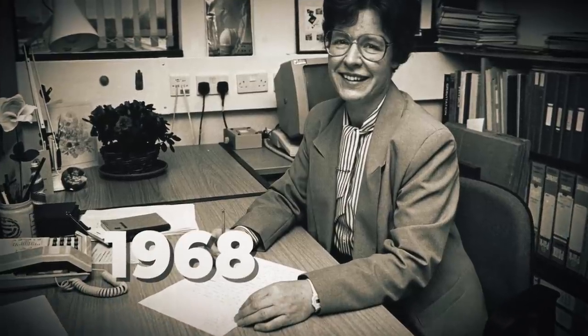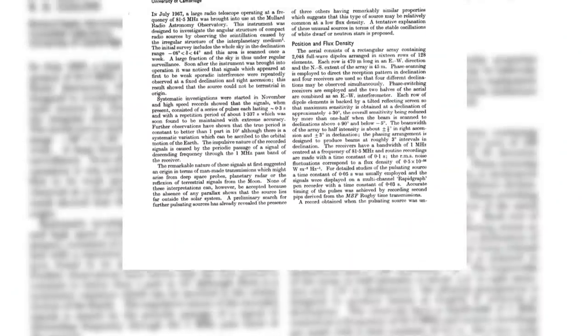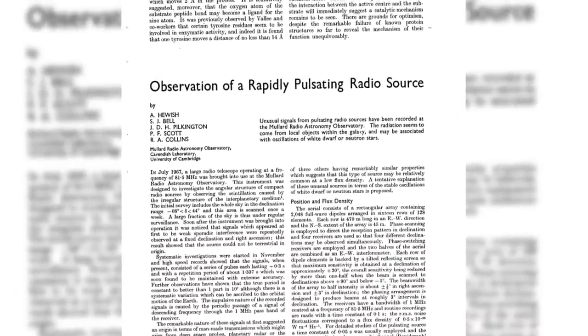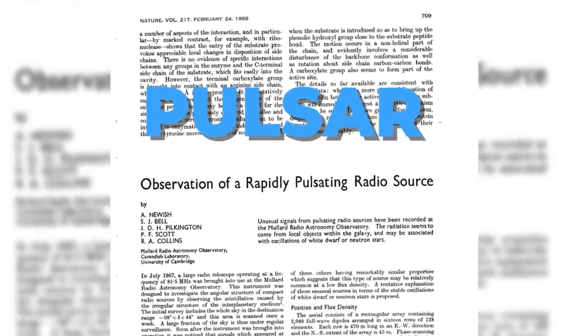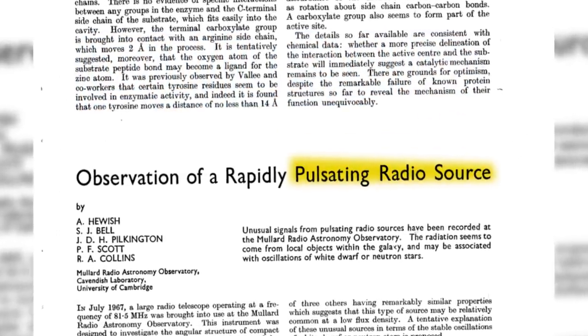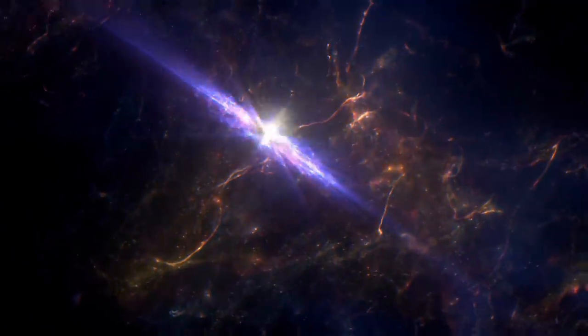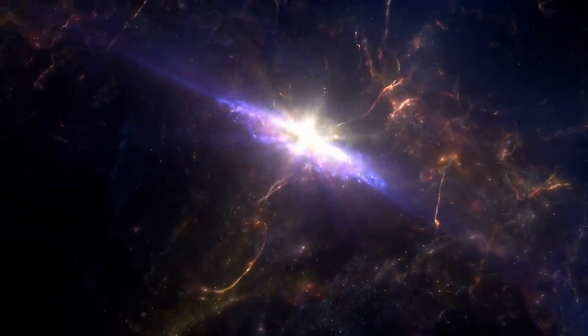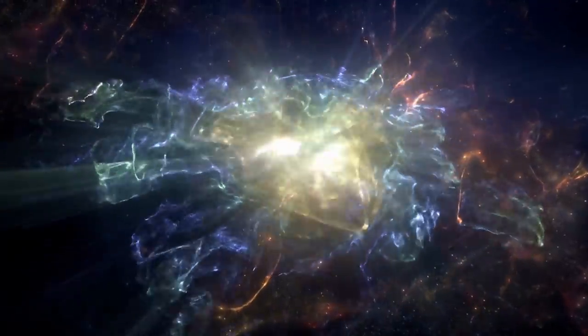In the 1968 publication of their work, the Cambridge team named the newly discovered object a pulsar, from pulsating radio source. A pulsar is a special type of neutron star, which are incredibly dense objects formed during the violent, explosive deaths of massive stars.